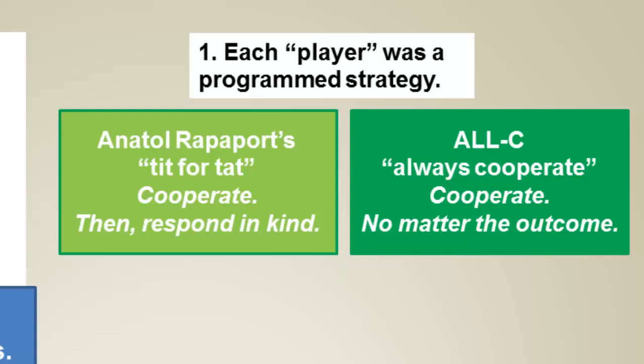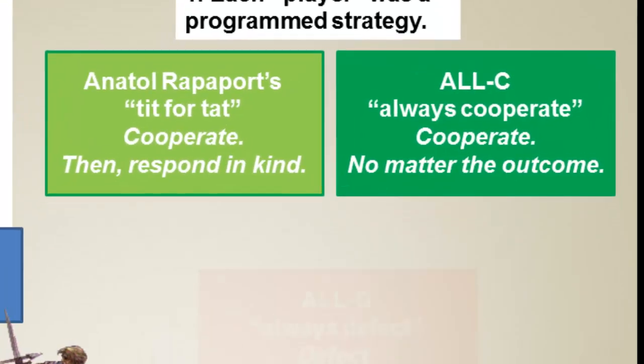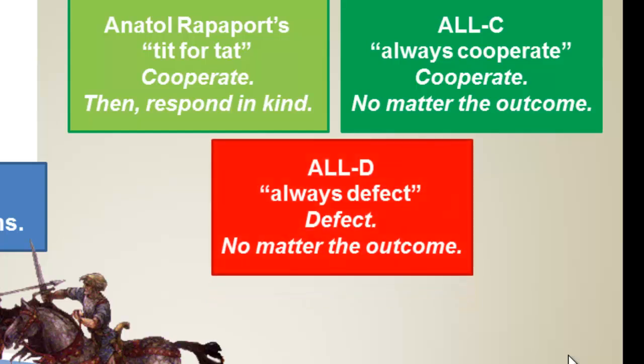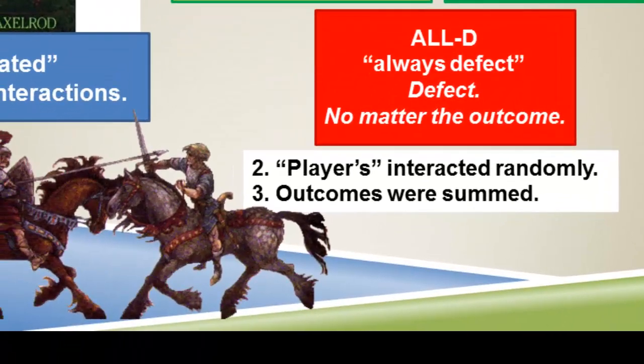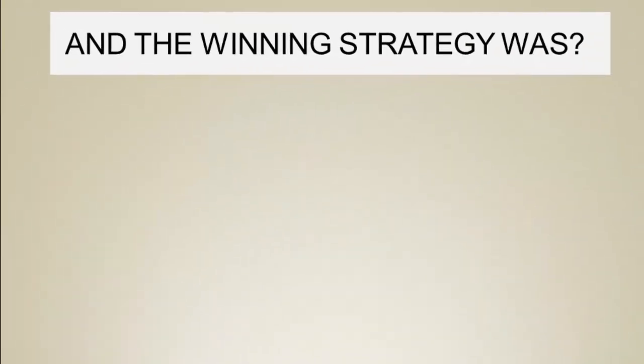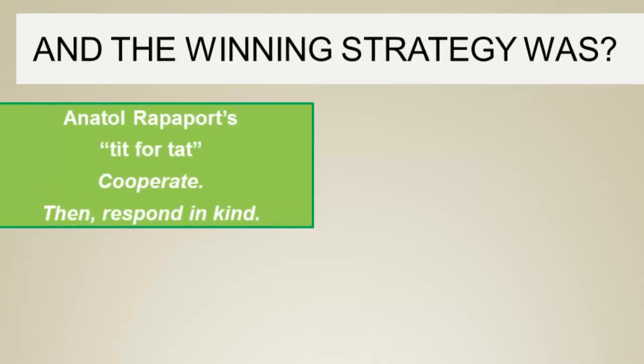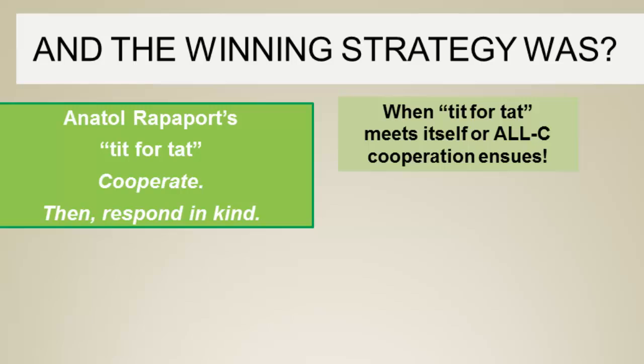Another strategy submitted was Always Cooperate, meaning whatever the other player does, continue to cooperate. Another was Always Defect, meaning never cooperate no matter what the other player does. There were many other strategies, but we'll focus on these three. When Tit for Tat meets itself, cooperation follows. The same happens when Tit for Tat meets Always Cooperate — cooperation ensues and continues with no defection.